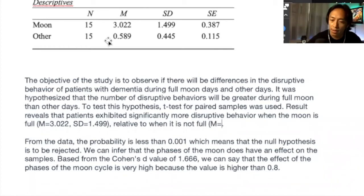You can also round this off into two decimal places. So this is the average disruptive behavior when the moon is full relative to when the moon is not full. Then let's insert our descriptives again. So mean equals, here it is, 0.589. You will notice that I no longer place the zero. So in reporting, we eliminate the zero prior to the decimal point SD of 0.445. And then, so that's the descriptive that I'm talking about. Mean and standard deviation. But we say that the difference between 3.022 and 0.589, that's a lot of difference. A difference of more than two points.